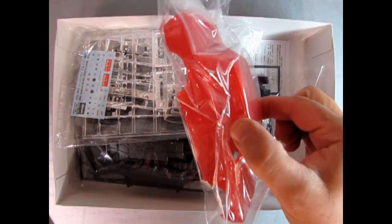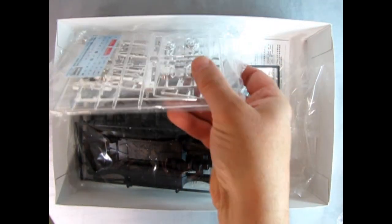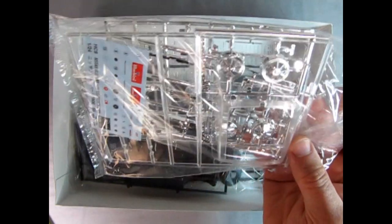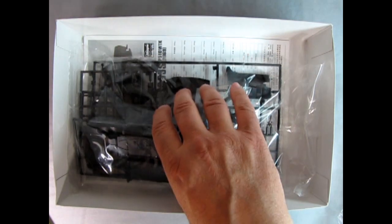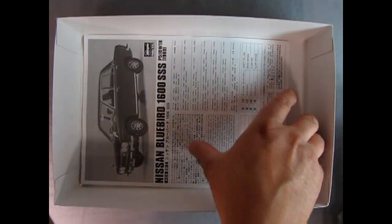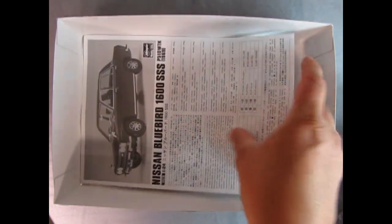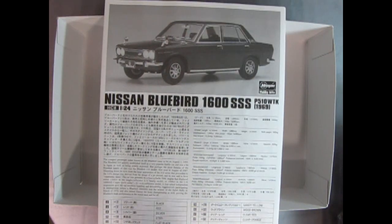As we open the lid on our Nissan Bluebird we get to take a look at the great parts inside. Here we have the body molded in red plastic which is a bit unfortunate. It would be nice if it was molded in white plastic. In this bag we've got our clear and chrome parts as well as the decal sheet. Here we have all the black plastic pieces in one convenient bag including the tires. And last but not least we have our instruction sheet. What we'll do next is open this up and see how to put it together.